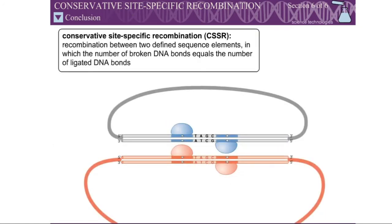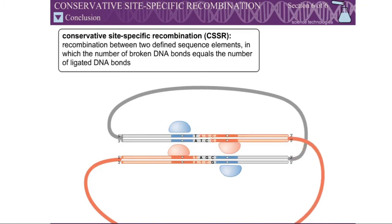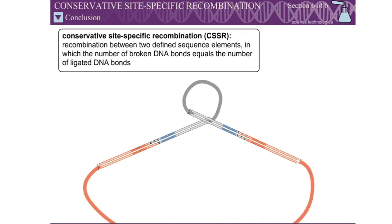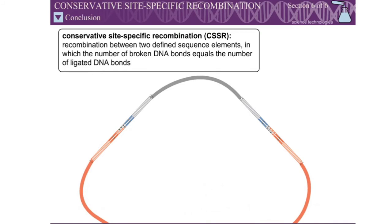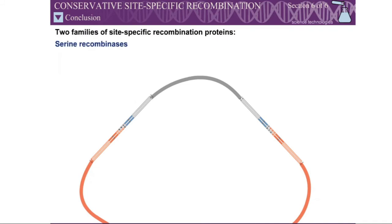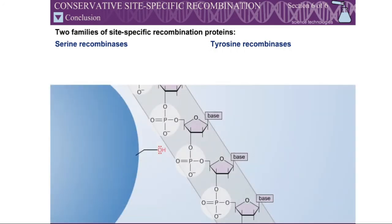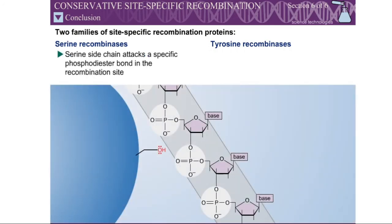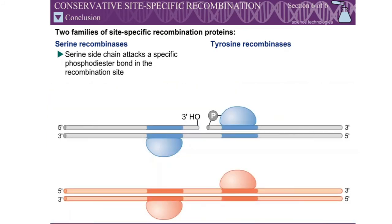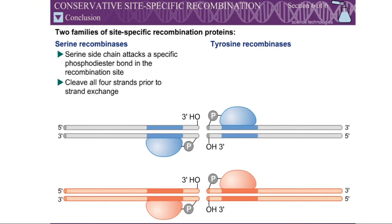Conservative site-specific recombination is recombination between two defined sequence elements called site-specific recombination sites. There are two families of proteins responsible for site-specific recombination: the serine recombinases and the tyrosine recombinases. For the serine recombinases, the side chain of a serine residue within the active site attacks a specific phosphodiester bond in the recombination site. The serine recombinases cleave all four strands prior to strand exchange, with one recombinase protein molecule acting on each strand.